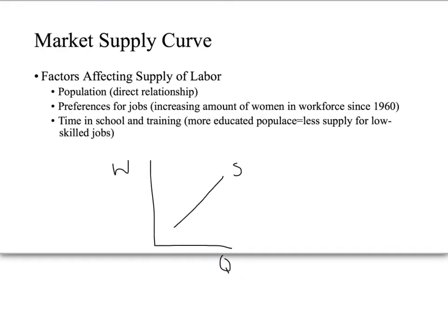A market supply curve, though, is what we're used to — just the upward sloping supply curve. The reasons we can shift supply, either to the left to decrease or to the right to increase, is either through population — more people means more supply of labor — or preferences for jobs.